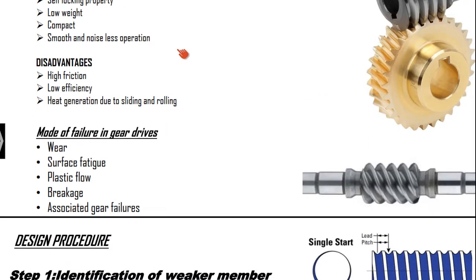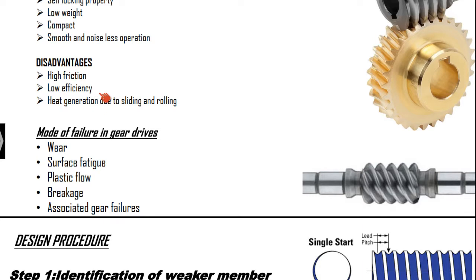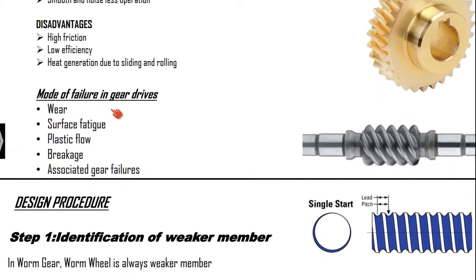Coming to the disadvantages: sliding and rolling are happening in the system. Because of that, we can expect high friction and very significant heat generation due to the sliding and rolling. You also have to compensate for the loss of power. All this high friction and heat generation are highly related to efficiency. So in a design of worm gear, the efficiency matters because we have to calculate the efficiency of this gearing.